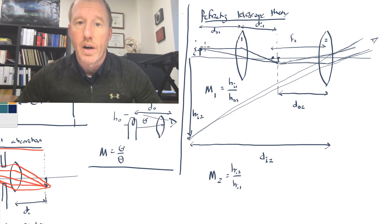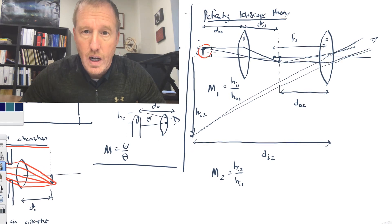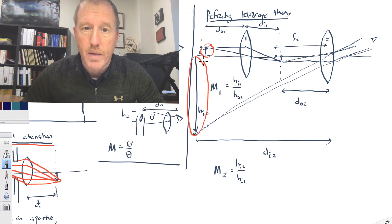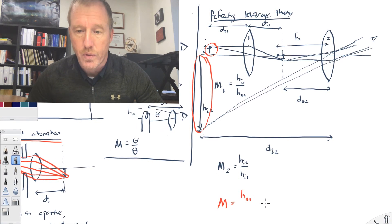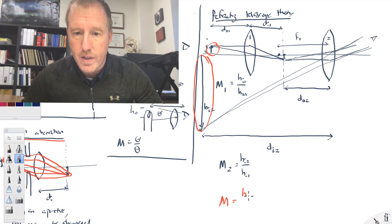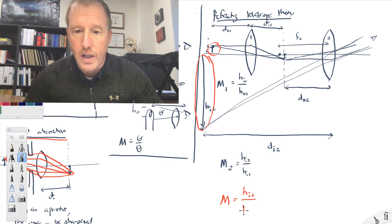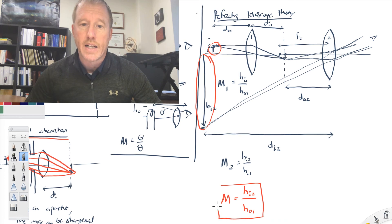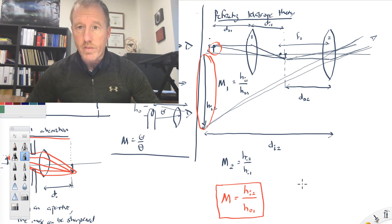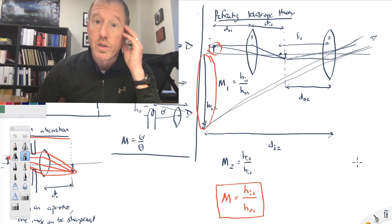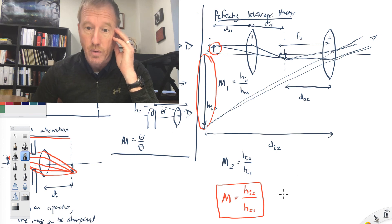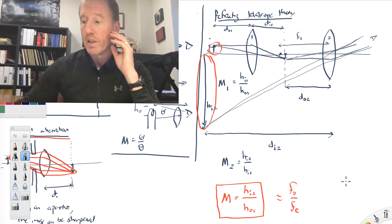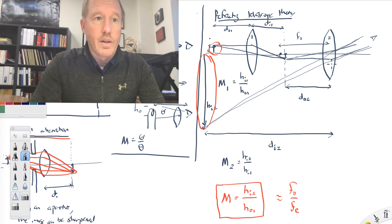And then overall, by comparing the height of your original object to the height of the final image formed, that gives you the magnification of your telescope — specifically the height of the image formed by lens two divided by the height of the object you're looking at with lens one. This should be approximately equal to the focal length of the objective lens divided by the focal length of the eyepiece lens. So go back and look at the measurements from when you designed your telescope. Hopefully that will get you going on this lab, and I wish you success.